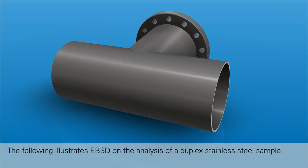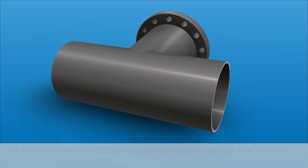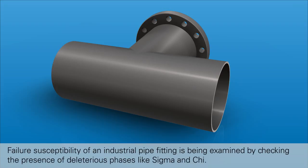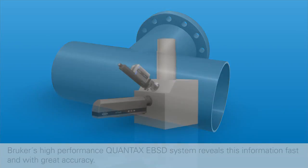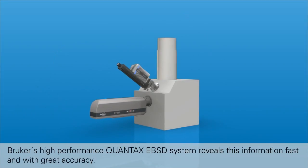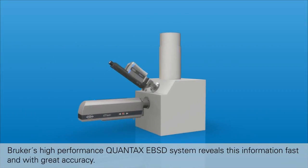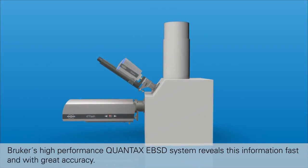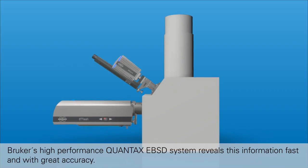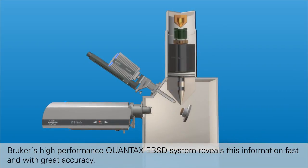The following illustrates EBSD on the analysis of a duplex stainless steel sample. Failure susceptibility of an industrial pipe fitting is being examined by checking the presence of deleterious phases like sigma and chi. Bruker's high-performance Quantax EBSD system reveals this information fast and with great accuracy.